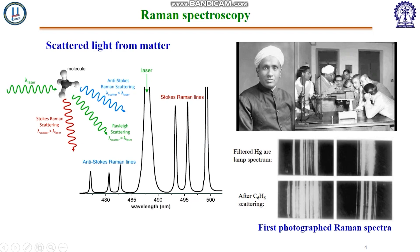the oscillating electromagnetic field of the photon induces a polarization of the molecule's electron cloud. This leaves the molecule in a higher energy state with the energy of the photon transferred to the molecule. This can be considered as the formation of a very short-lived complex between the photon and the molecule, which is commonly called the virtual state of the molecule. Here you can see the first captured Raman spectra by C.V. Raman.